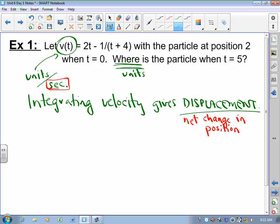So if I know where the particle is when time is 0 and I want to know where the particle is when time is 5, I need to know the displacement between those two times. So if I want the position at time equals 5, I'm going to start with the position at time equals 0, and then I'm going to find the displacement of the particle between time equals 0 and time equals 5.